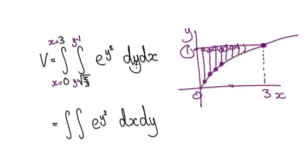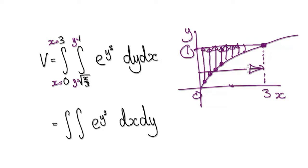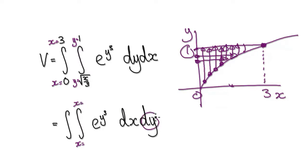Now we need to translate it — rather than dy then dx, we want dx then dy. dx means we need to move parallel to the x-axis, moving in this direction. We need to start here and end at the line. On the outer integral it must be x equals something — so y equals something.